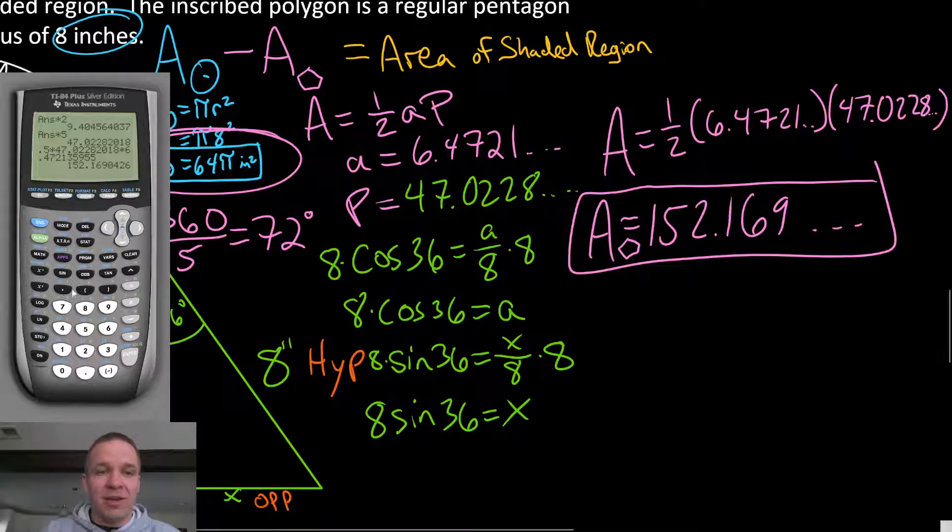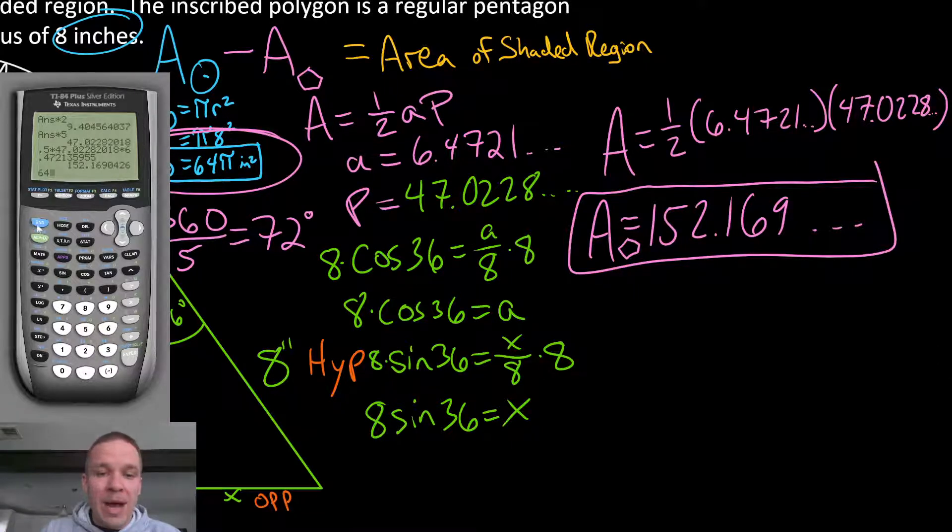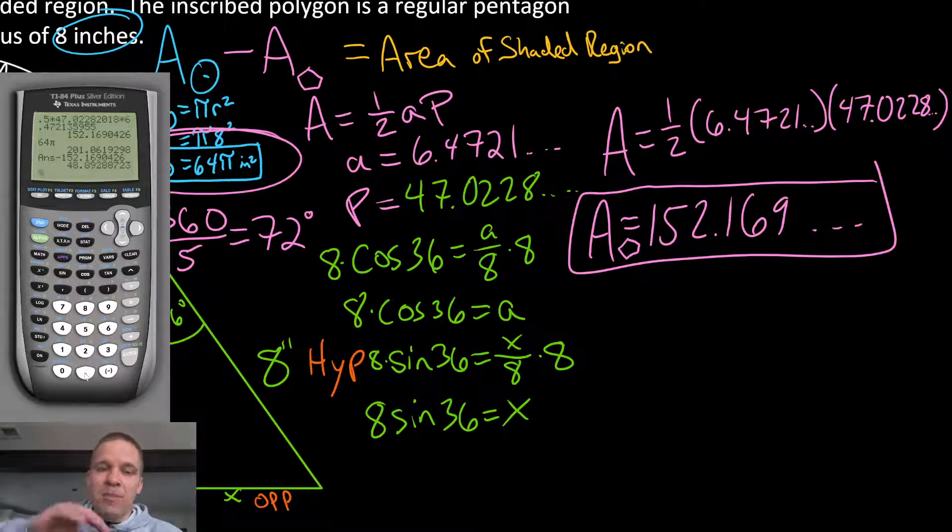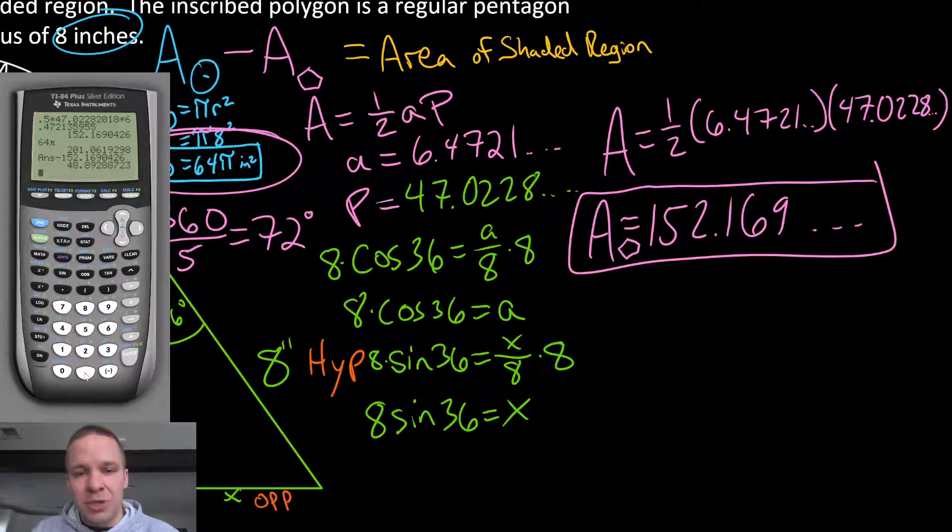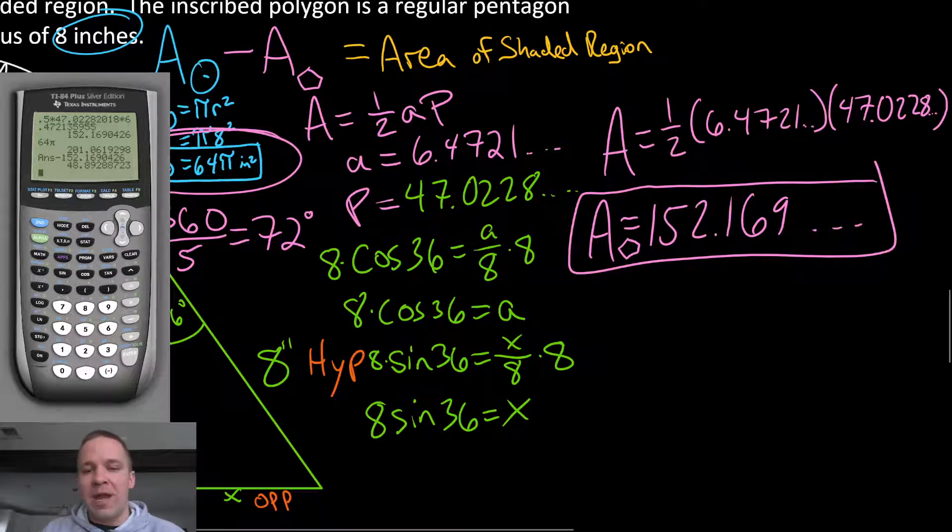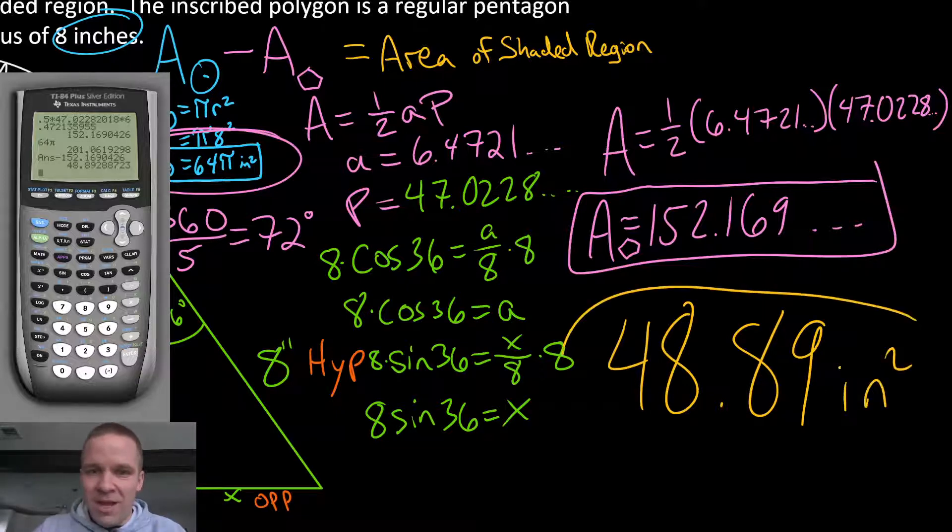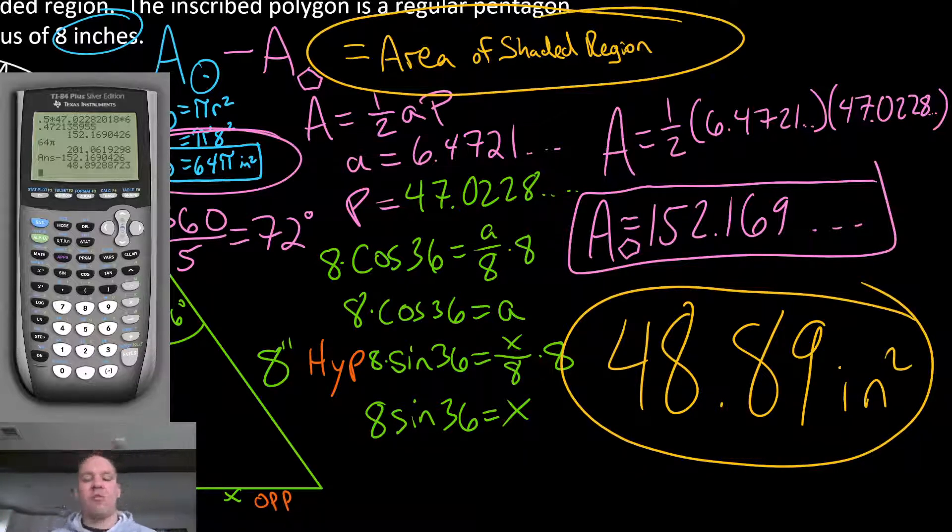So let's grab that calculator again. I'm going to have 64 pi. So hit second and that caret button has pi. Hit enter. And we're going to subtract the 152. And again, you could arrow up if you'd like. Hit enter, 48.89288. So 48.89, 48.89 inches squared is my final answer for the area of that shaded region.